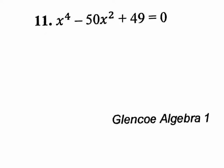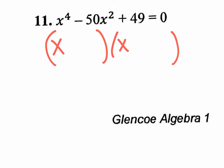Continuing with number 11. Normally with a quadratic trinomial — x squared, an x, and a number — you think: what times what gives you the last term, that if you add together gives the middle one. Normally you'd put x here and x there because x times x is x squared. However, you don't have x squared, you have x to the fourth, so these need to be x squared times x squared.